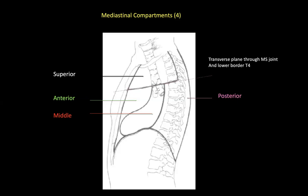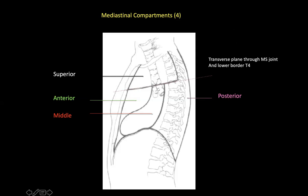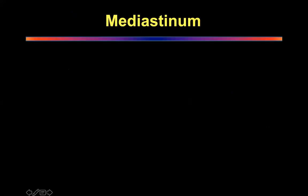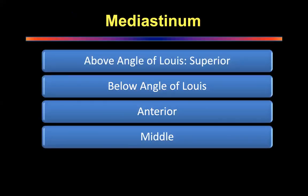What is the border of anterior, middle, and posterior mediastinum? This is just a revision. The anterior mediastinum is lined anteriorly by the posterior border of the sternum and posteriorly by the anterior border of the pericardium. The middle mediastinum is lined by the anterior border of pericardium anteriorly and the posterior border of pericardium posteriorly. The posterior mediastinum is behind the posterior pericardium and up to the vertebral body. This is the classical division.